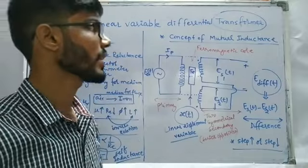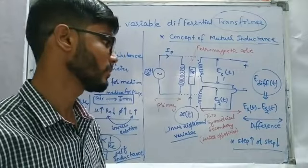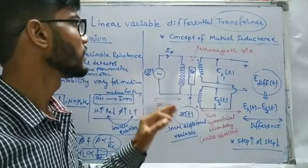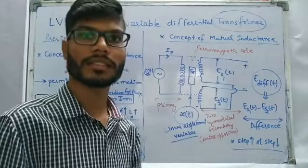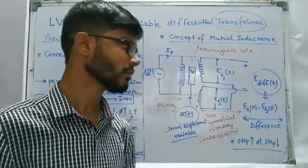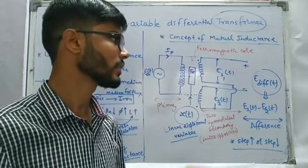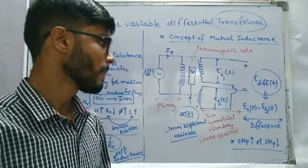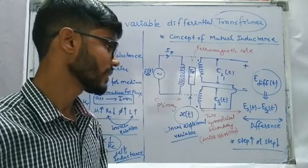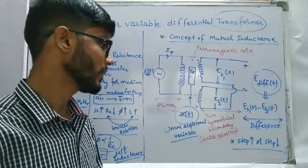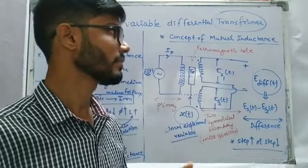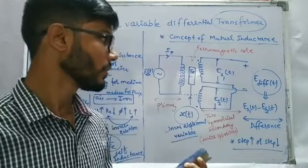Let's look at why we call it a Linear Variable Differential Transformer. 'Linear' because the displacement provided to the system is a linear input. 'Differential' comes because of the series opposition of the secondary windings. And 'transformer' because it can step up or step down voltage based on the primary and secondary number of windings. LVDT has one primary winding, two symmetrical secondary windings in series opposition, and one ferromagnetic core.